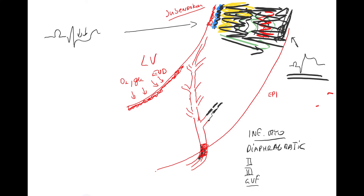In contrast, for an anterior wall infarct, you would typically see the ST elevation on the precordial leads — V3, V4, V5, V6. So if there is an anterior infarct, that's exactly where you'll find the ST elevation: V3, V4, V5, V6.